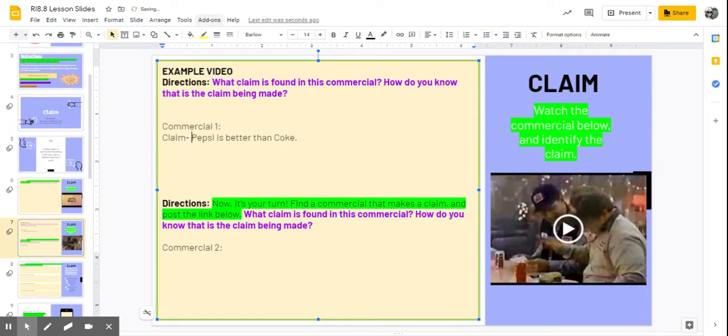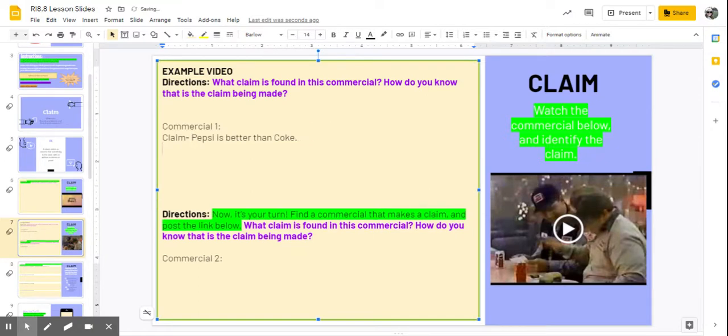So how do I know that this is the claim being made? Evidence, or my reasoning. So this is what I see. That's how I'm gonna think about it: this is what I see.